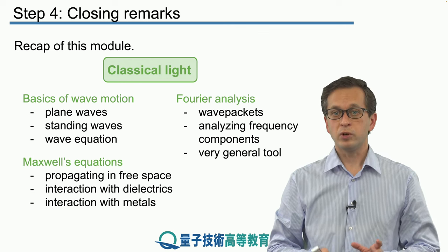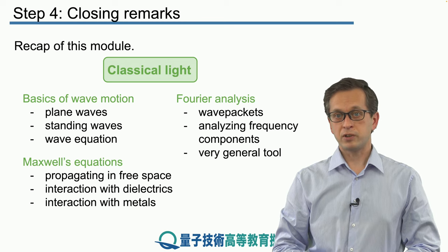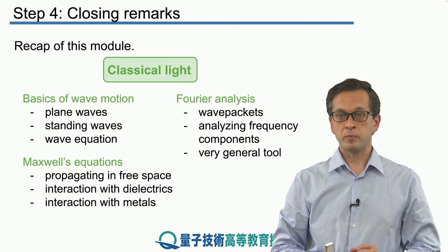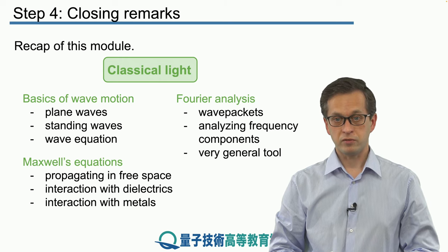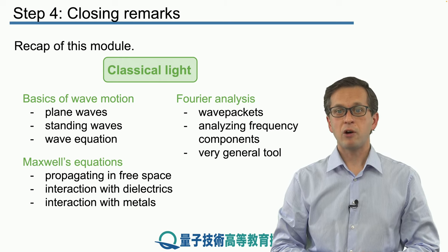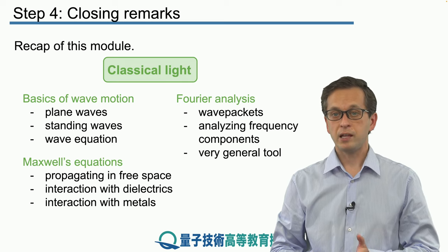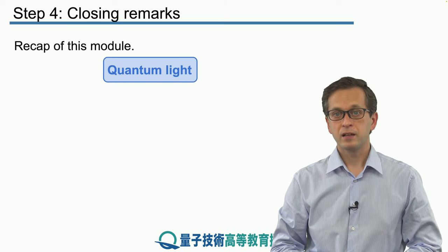Finally, we concluded our discussion of classical light by looking at Maxwell's equations. We looked at propagating electromagnetic radiation in free space, and we looked at how it interacts with different types of material, namely with dielectrics and with metals.